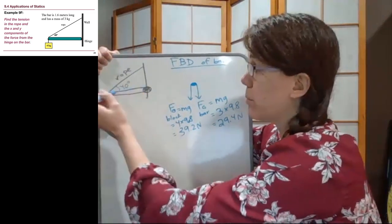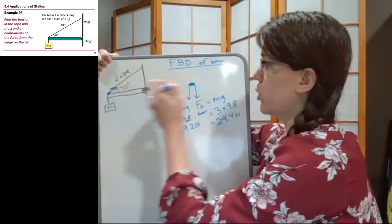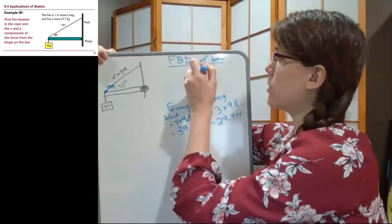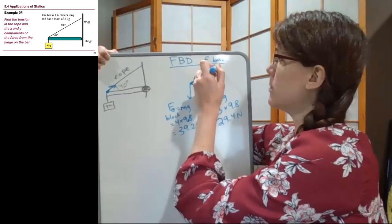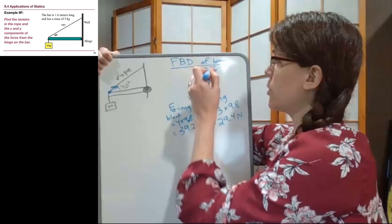So because it is attached over here and pulling away along the rope, we're going to have this angled force of tension, which is going to have a horizontal and a vertical component.